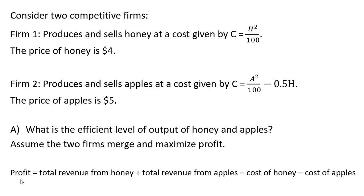Joint profit of the merged firms will be total revenue from honey plus total revenue from apples, minus the cost of honey, minus the cost of apples. So let's set up this equation.